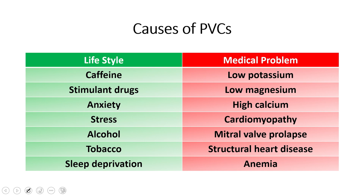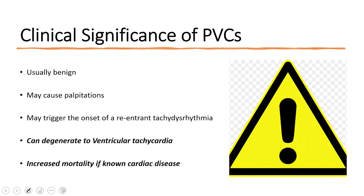However, they can also be caused by medical problems — low potassium, low magnesium, electrolyte abnormalities, and sometimes even structural heart disease. This is where it's really important to discern what's going on with your patient, because in otherwise young and healthy people PVCs are generally benign. They may feel their heart flutter or like it skips a beat — usually not a problem.